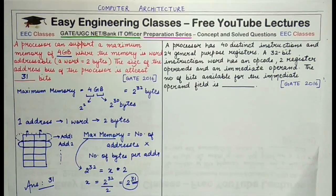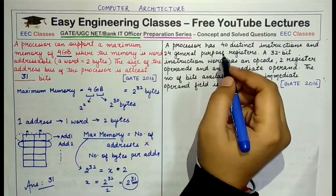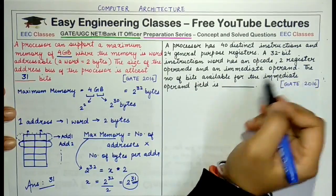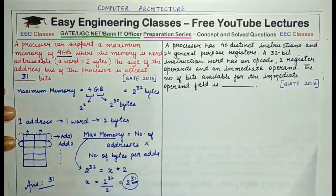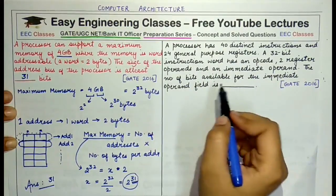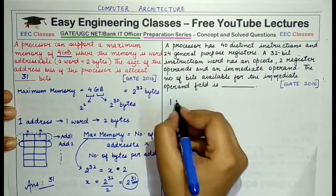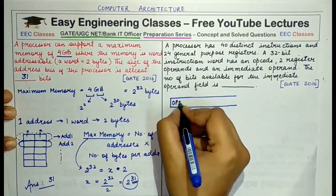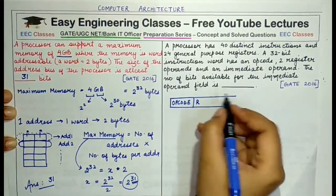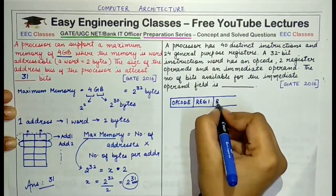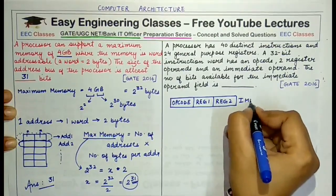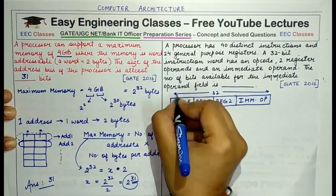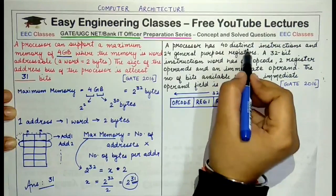The second question: a processor has 40 distinct instructions and 24 general purpose registers. The 32-bit instruction word has an opcode, two register operands, and an immediate operand. We need to find the number of bits available for the immediate operand field. The layout of each 32-bit instruction word has an opcode field, then register operand 1, then register operand 2, and then the immediate operand — this entire instruction word is 32 bits in length.